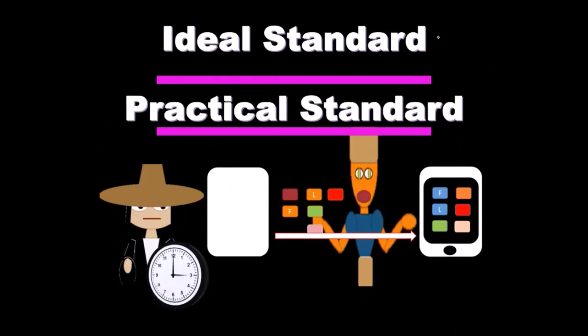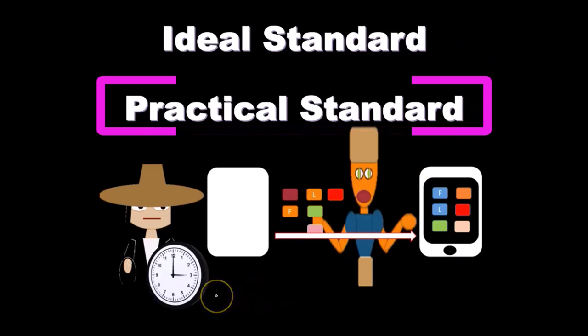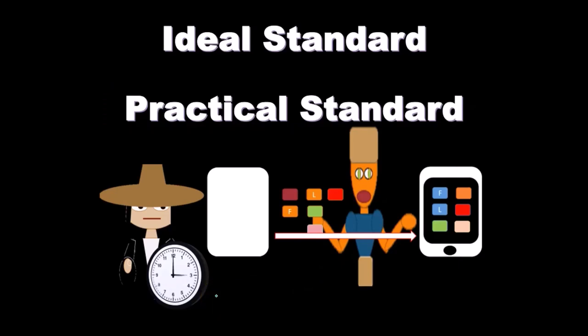Or we can have the practical standards. We can try to accommodate in our calculation from the ideal to what we think would be a reasonable practical standard based on our analysis. So we can basically use our stopwatch, get the ideal standard, and then try to somehow work in what we would think would happen with fatigue and breaks and things like that.